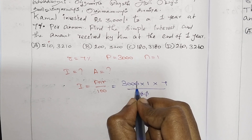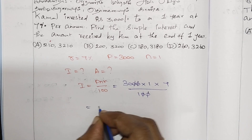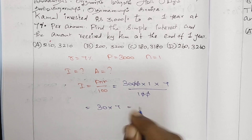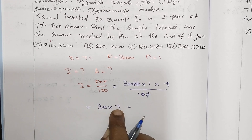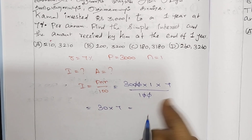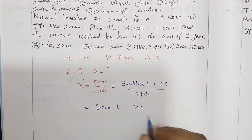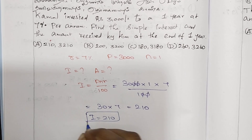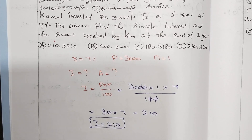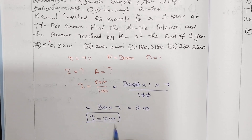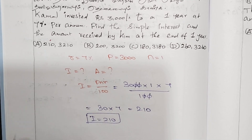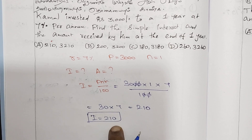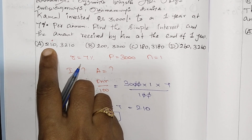Simplifying: 3 into 7 equals 21. Then 30 into 7 gives 210. Simple interest is 210.